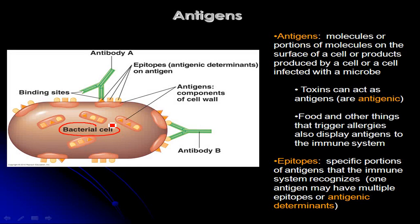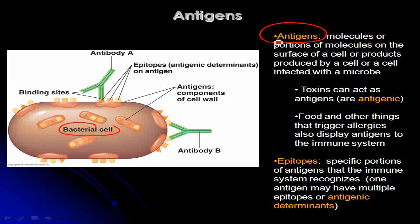Now let's talk more specifically about what antigens are. In this diagram we have a generic bacterial cell, but it could be any other type of microbe — a virus, a yeast cell, or something like a pollen grain. The surfaces of these microbes are complex and can have many different types of molecules embedded in them. Many of those molecules can be recognized by our immune system as antigens — something foreign that it can react to.